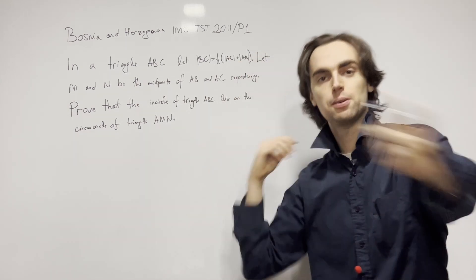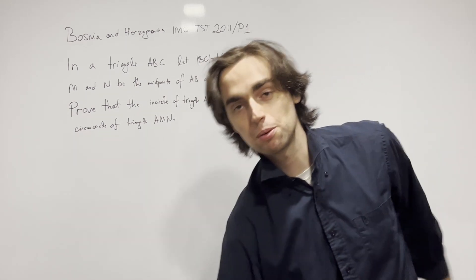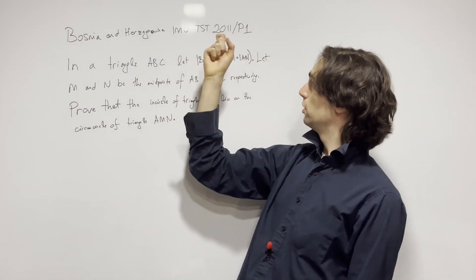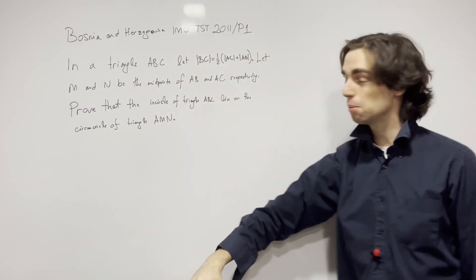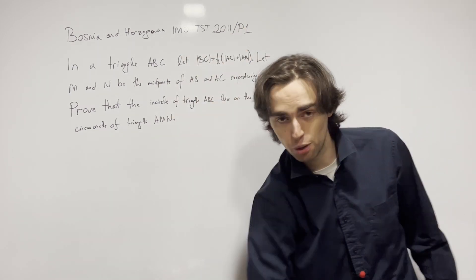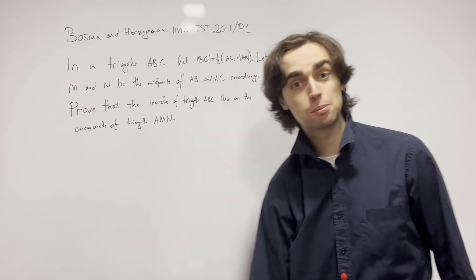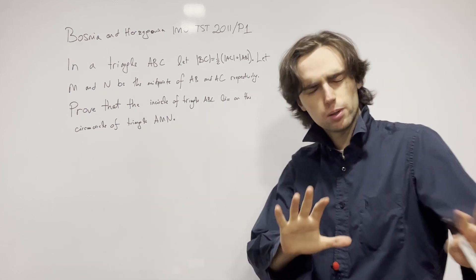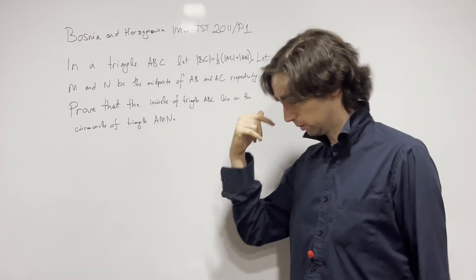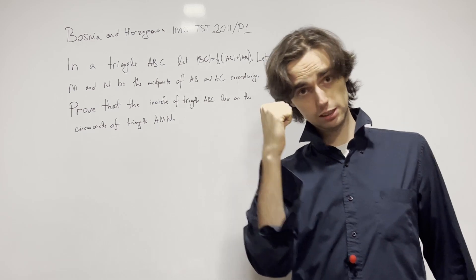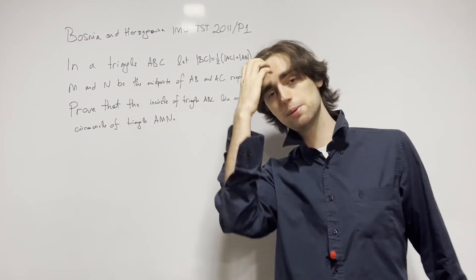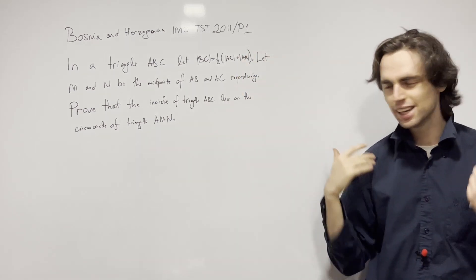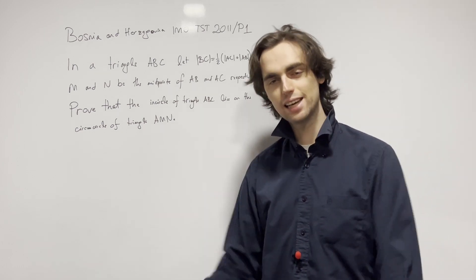Hello fellow problem solvers. Today we're going to be doing a problem from the Bosnian and Herzegovina IMO team selection test 2011, problem number one. I suggest you try this nice geometry problem out for a minimum of 20 minutes, ideally 40 minutes to an hour. If you'd like to go along with us, give it a go for the next 20 minutes. Draw a diagram, put your first ideas out on paper. Now let's begin.